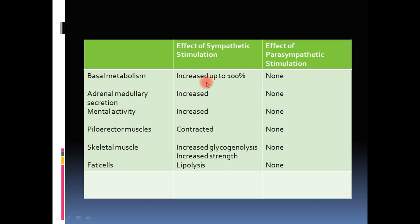Finally, sympathetic stimulation increases basal metabolism, increases adrenal medullary secretion, increases mental activity, and erects pilomotor (hair) muscles. In skeletal muscle, sympathetic stimulation causes increased glycogenolysis — breaking down glycogen to produce glucose for energy. In fat cells, sympathetic stimulation causes lipolysis, releasing lipids into the blood to serve as metabolic fuel for energy production.